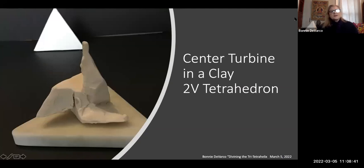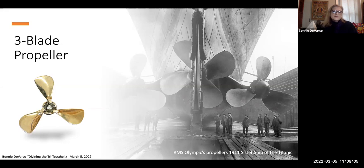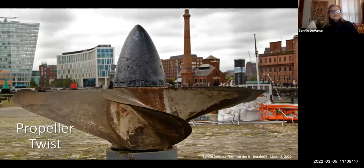Looking closer at this turbine — what does it remind you of? You can see that there's twisting going on and it's very much like a three-blade propeller. In Bucky's earliest chronofile, I'm fascinated by the picture he had. This is the RMS Olympic — a sister ship to the Titanic, a 1911 picture. On the right and left, you see the three-blade propellers. It looks like a propeller — you can see the twist in propellers. I think Bucky might have had a picture of this because he was fascinated by the twist.